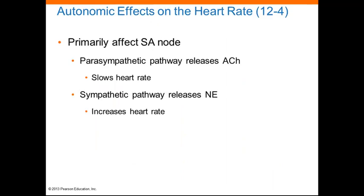Autonomic effects on heart rate primarily reflect the responses of the SA node to acetylcholine and norepinephrine. Acetylcholine is released by parasympathetic motor neurons, which lower the heart rate. Norepinephrine is released by sympathetic neurons, which increase heart rate. A sustained increase in heart rate follows the release of epinephrine and norepinephrine by the adrenal medulla during sympathetic activation.